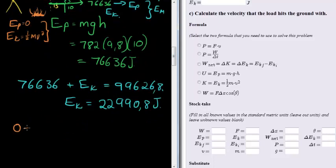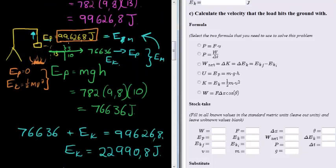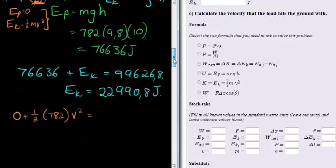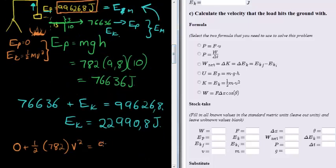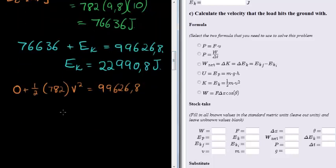So we find that zero plus a half the mass 782 times velocity squared must equal my mechanical energy that I have had from the beginning 99626.8. And that means that velocity squared is what I get when I divide both sides with these two numbers.